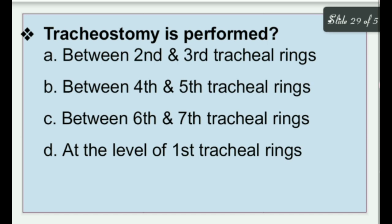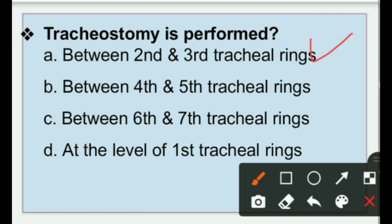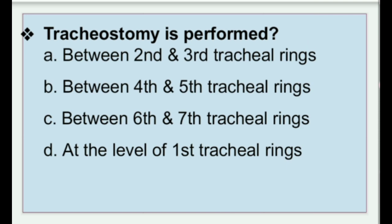Next: Tracheostomy is performed between — second and third tracheal rings, fourth and fifth tracheal rings, sixth and seventh tracheal rings, or at the level of the first tracheal ring. Tracheostomy means making an opening in the neck to place a tube into a person's windpipe. It is performed between the second and third tracheal rings.